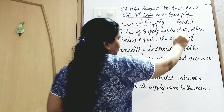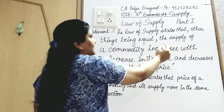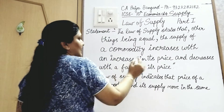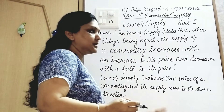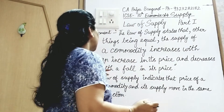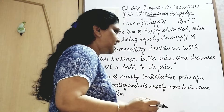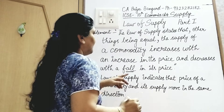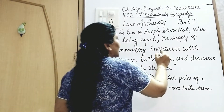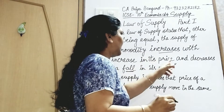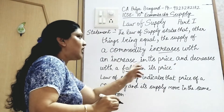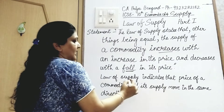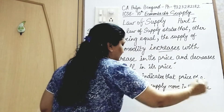The law of supply states that, other things being equal, the supply of a commodity increases with an increase in its price, and decreases with a fall in its price. The law of supply indicates that price of a commodity and its supply move in the same direction.